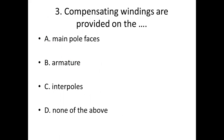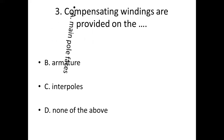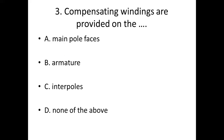Third bit: Compensating windings are provided on the dash. Option A: Main pole face. Option B: Armature. Option C: Interpoles. Option D: None of the above. Answer — Option A: Main pole face.